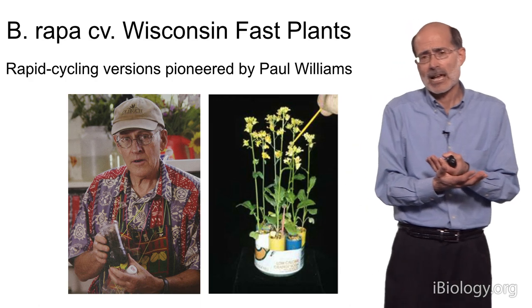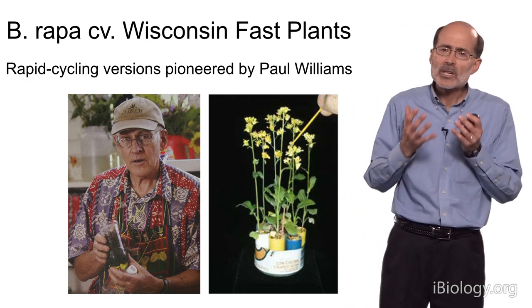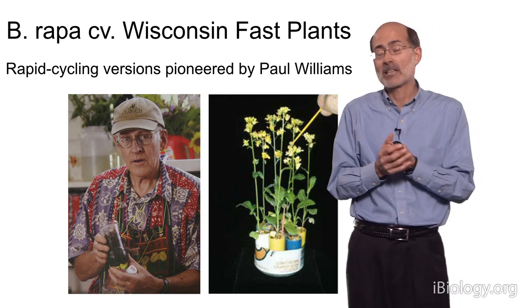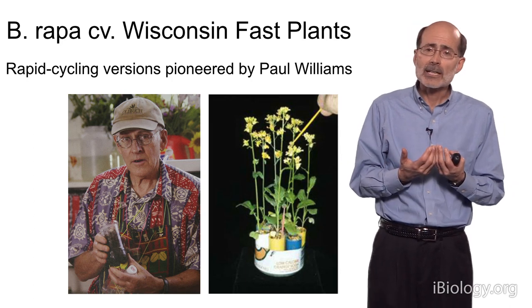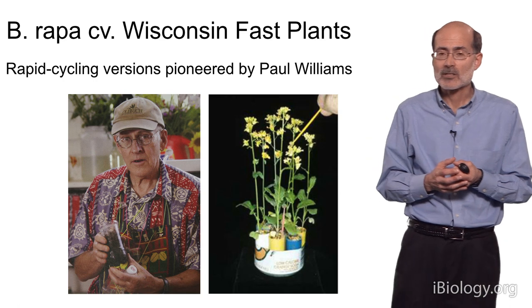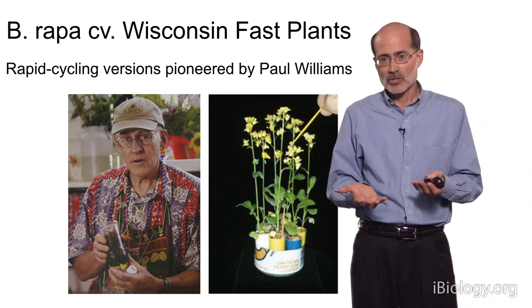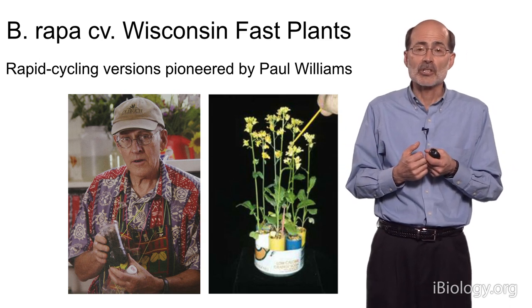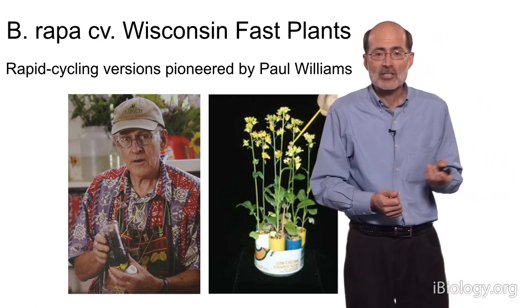The lines that Paul Williams developed have self-incompatibility, meaning they need to find a different plant in order to have a pollination event and produce seeds. But for a genetic model for the classroom, we wanted to extend it by making self-compatible plants. By 'we,' I'm referring to myself and my colleague Scott Woody, who's been my partner in this effort at the University of Wisconsin. We've worked along with teams of undergraduates and high school students to develop a self-compatible version of Brassica rapa with this rapid life cycle as a genetic model.